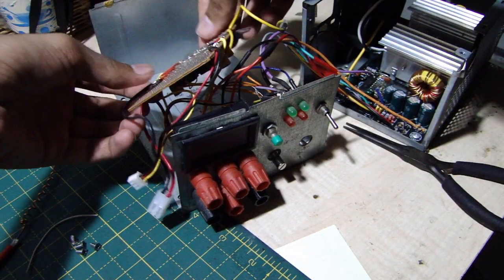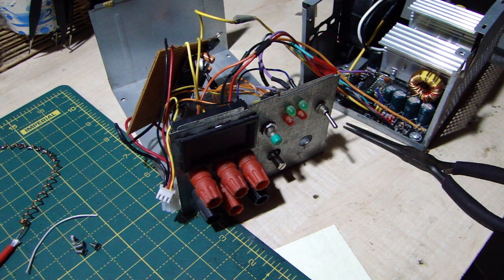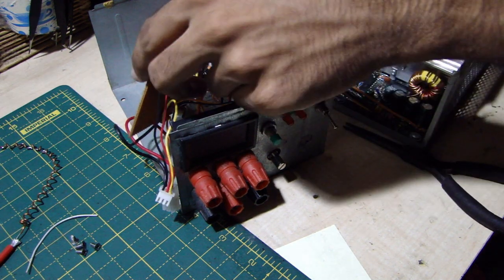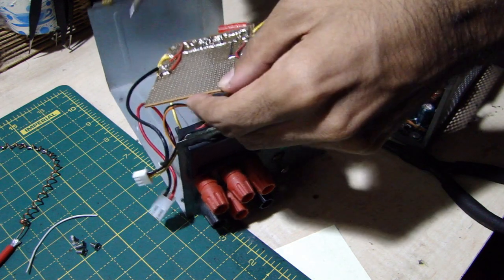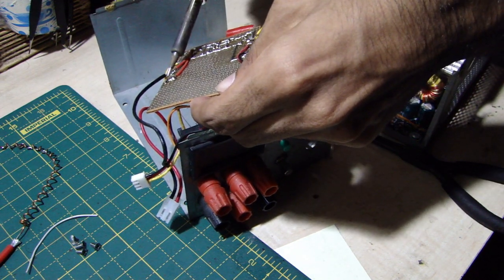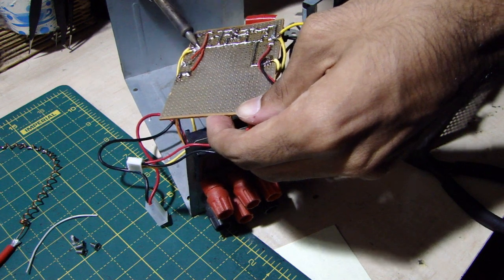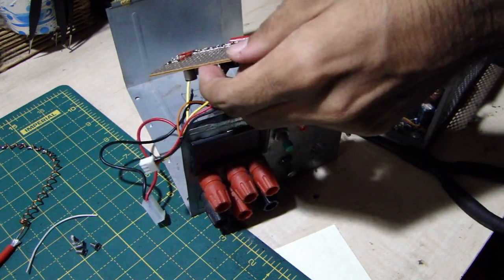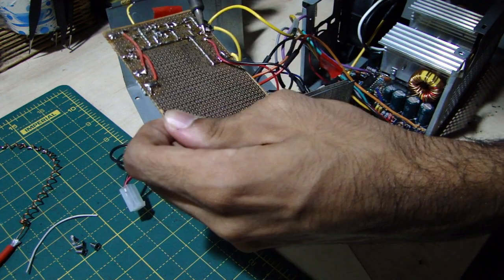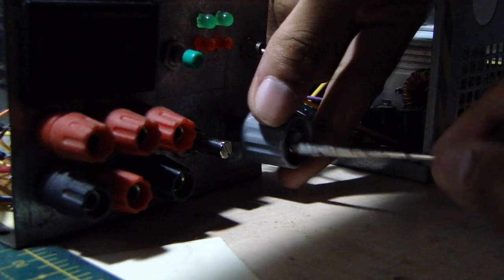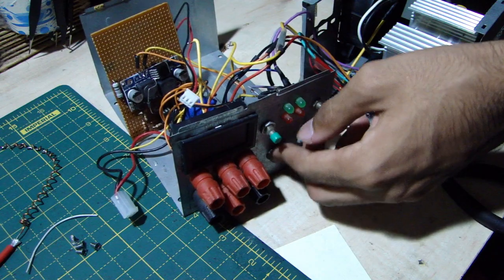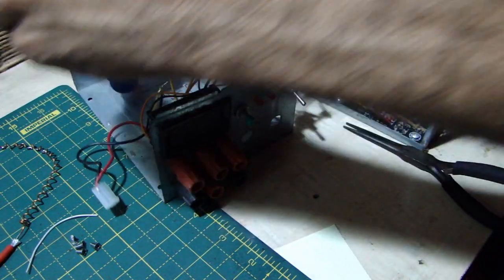Desoldering the power input and output connection should be an easier task. Once those are out of the way the potentiometer knobs can be removed and the whole assembly pulled out of the case with relatively little difficulty.